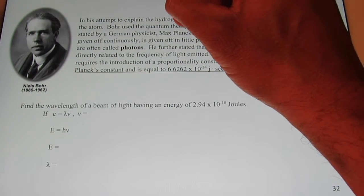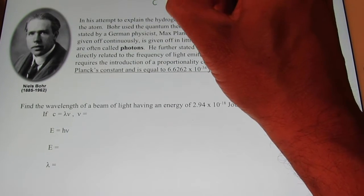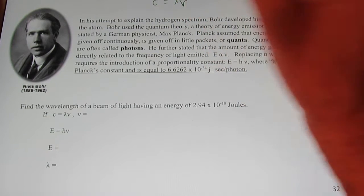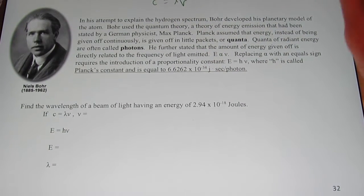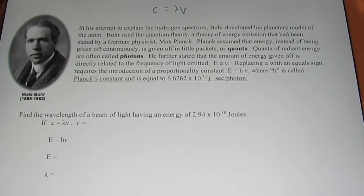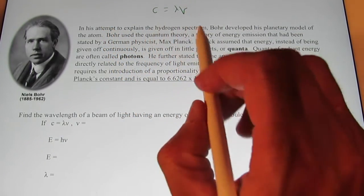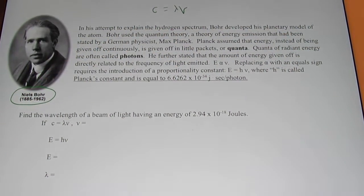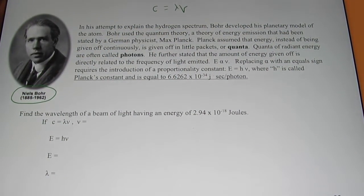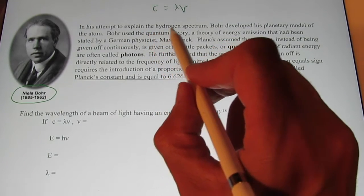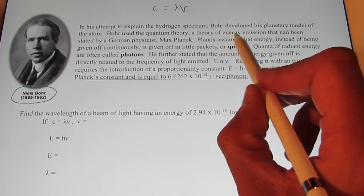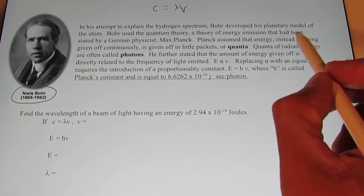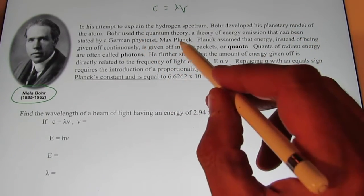We use the equation C equals lambda nu, and we're going to be using that again today. So here we go. In his attempt to explain the hydrogen spectrum, a man named Niels Bohr developed his planetary model of the atom. Bohr used something called the quantum theory, a theory of energy emission that had been proposed by a German physicist, Max Planck.